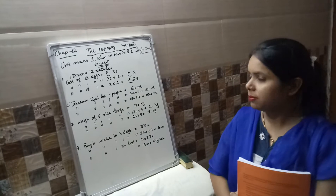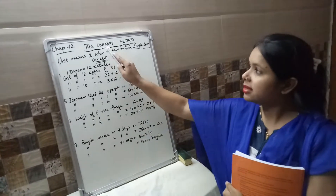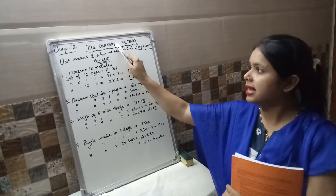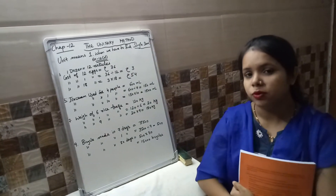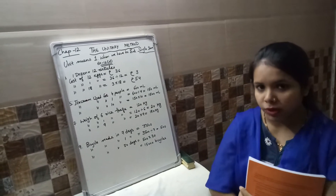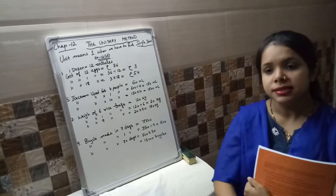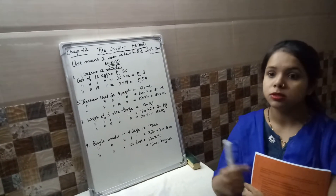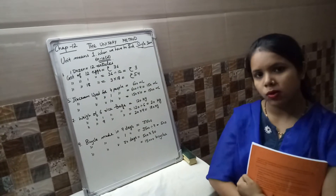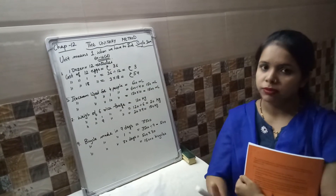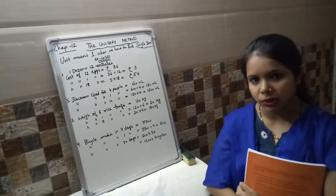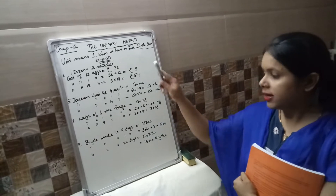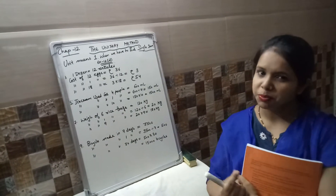Now, chapter 12 is the unitary method. What is the meaning of unitary method? When we have to find the value of a single term — for example, I have 5 oranges and the cost of 5 oranges is rupees 10. You have to tell the cost of 1 orange. When you do division, 10 divided by 5, that means 2 will come. So the cost of 1 orange is rupees 2. Your full exercise is based on that simple topic only.